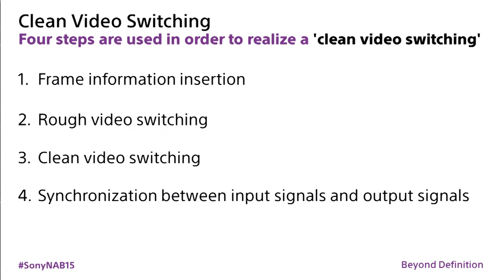Sony invented a solution. There are three places to execute switching: at the source, at the switch, or at the destination. Sony chose destination-based, receiver-based switching. There are four steps: first, frame-information insertion — each packet in the thousands-of-packets stream needs to know which frame it belongs to. Then we execute a rough video switch with some imperfections, correct those imperfections, and finally produce clean, synchronized video output.